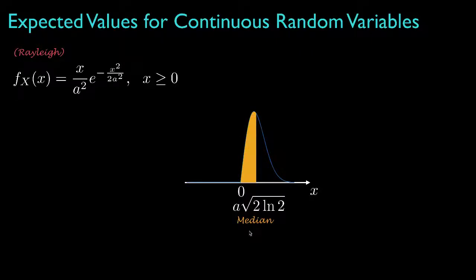Another way a density is characterized is by specifying the place at which half of the probability is on either side. This is called the median, and for this Rayleigh density the median is roughly 1.18 times the parameter A.